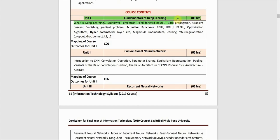The first unit is Fundamentals of Deep Learning. We will learn what deep learning is — it falls under the AI and machine learning domain. Topics include multi-layer perceptron, feed-forward neural networks, back propagation, gradient descent as an optimization algorithm, the vanishing gradient problem, and activation functions used inside the hidden layers of multi-layer perceptrons.